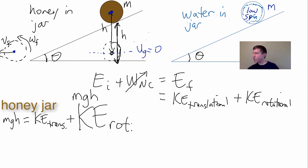Whereas in this situation, for our water in the jar, it'll still be MGH, but it will be a smaller amount of rotational kinetic energy. I'm going to make this really tiny KE rotational. But notice this and this are the same, so what does that tell us about the kinetic energy translational over here? It's got to be giant.